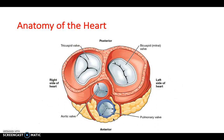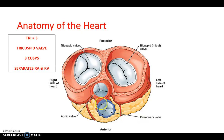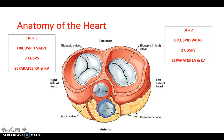Looking at the heart from above, the tricuspid valve clearly shows three demarcated cusps, while the bicuspid clearly shows two. You can also see the aortic and pulmonary valves here, which have three cusps each. Remember that 'tri' means three — the tricuspid valve separates the right side of the heart, and the bicuspid valve, with two cusps, separates the left side.